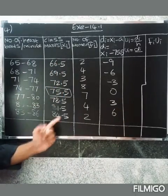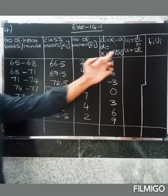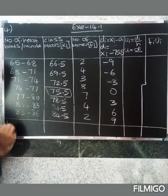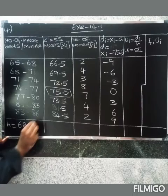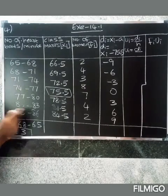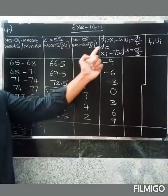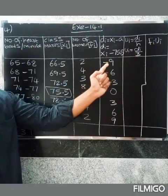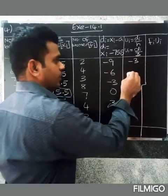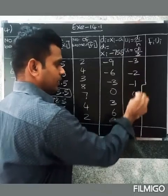Continuing di values: 78.5 minus 75.5 equals 3; 81.5 minus 75.5 equals 6; 84.5 minus 75.5 equals 9. Now Ui equals di divided by h. Here h equals 68 minus 65 equals 3, so h equals 3. Computing Ui: minus 9 divided by 3 equals minus 3; minus 6 divided by 3 equals minus 2; minus 3 divided by 3 equals minus 1; 0 divided by 3 equals 0.